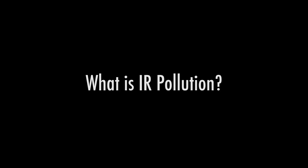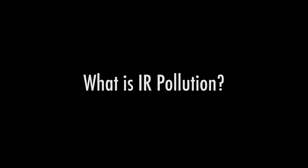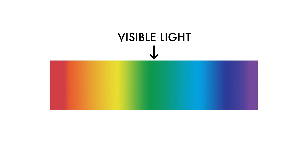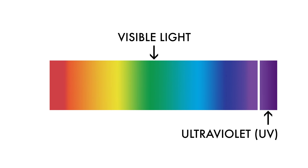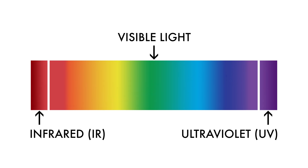First, what is IR pollution? This simple graphic represents the visible light that the human eye can see. However, there is light that we cannot see. On one end of the spectrum is ultraviolet light, UV, and at the other end of the spectrum is infrared light, IR.